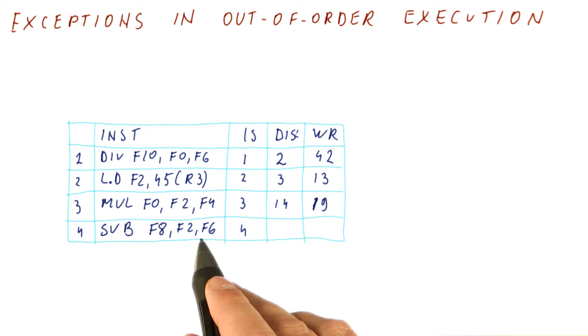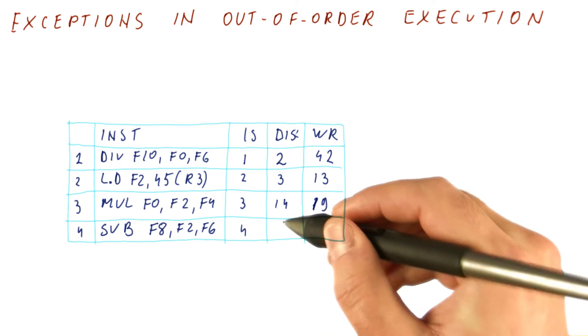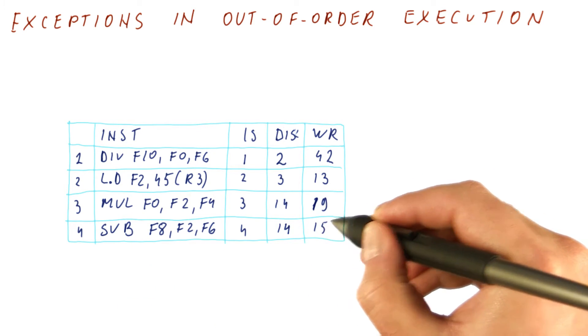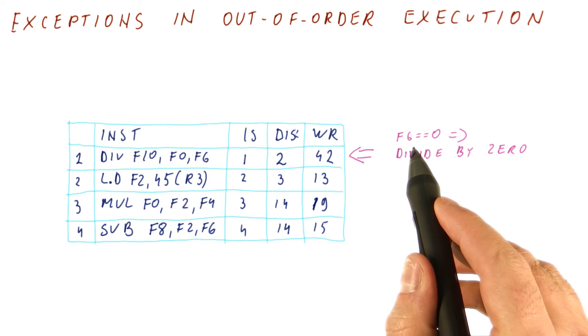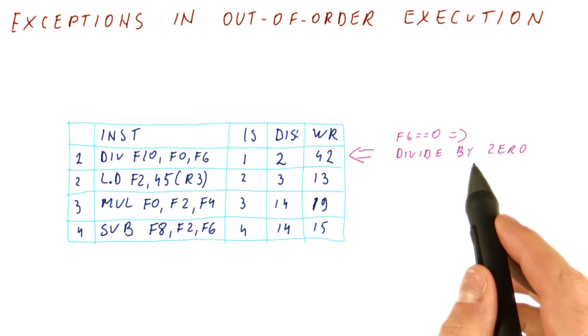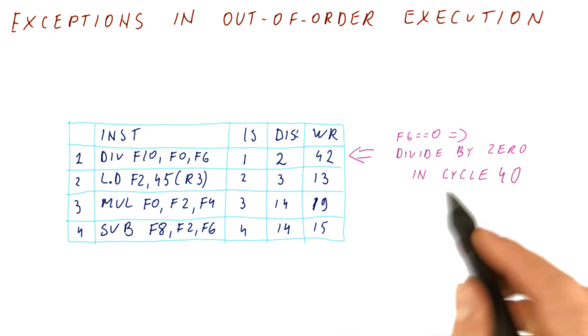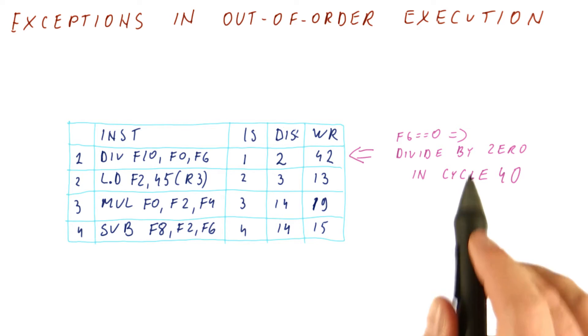And then this subtract is waiting for F2 and F6, so it can also be dispatched in cycle 14 and maybe finish in cycle 15. Let's say that F6 is 0, so we get a divide by 0 error. And let's say that is detected in cycle 40. Somewhere towards the end of the divide, we know that we have a divide by 0.